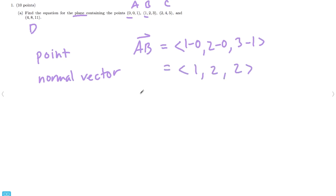And then CD would be 4 minus 2, 8 minus 4, 11 minus 5, which is 2, 4, 6.